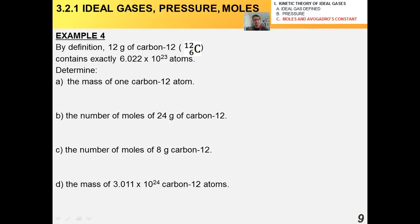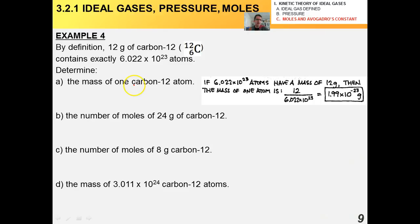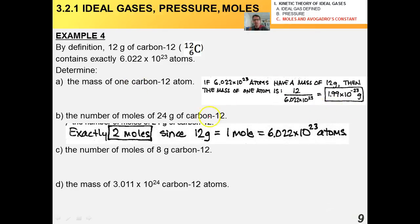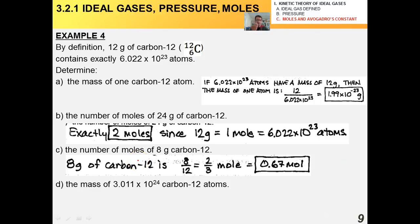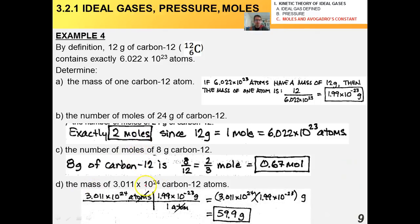Okay. The mass of one carbon-12 atom, I got about 2 times 10 to the minus 23 grams. The number of moles of 24 grams, well, it's 2 since 12 grams is 1 mole. The number of moles of 8 grams, well, that's 2 thirds of a mole. And the mass of 3 times 10 to the 24 carbon-12 atoms, I'm using the bridge method here, and I got 59.9 grams.